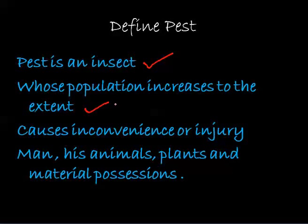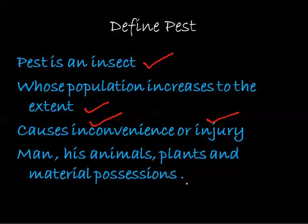...the population of the insect increases to that extent which may cause inconvenience or injury to the man, his animals, plants, or his material possessions like his household items or his daily-use items. So any insect increasing its population to that extent and causing harm or injury to humankind comes under the category of pests.